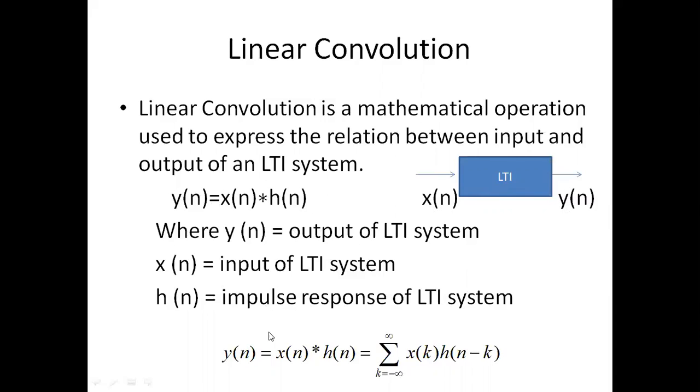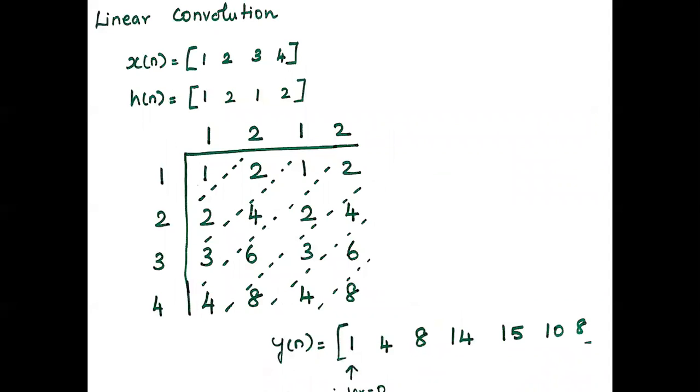The convolution of two sequences is given by the summation from k equals minus infinity to infinity: x(k) into h(n minus k). We will see how to calculate linear convolution.